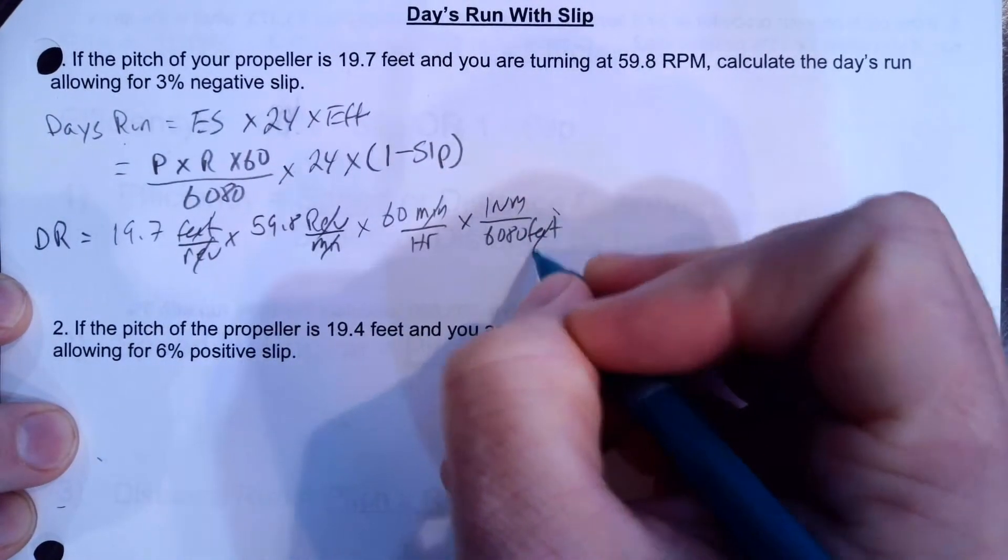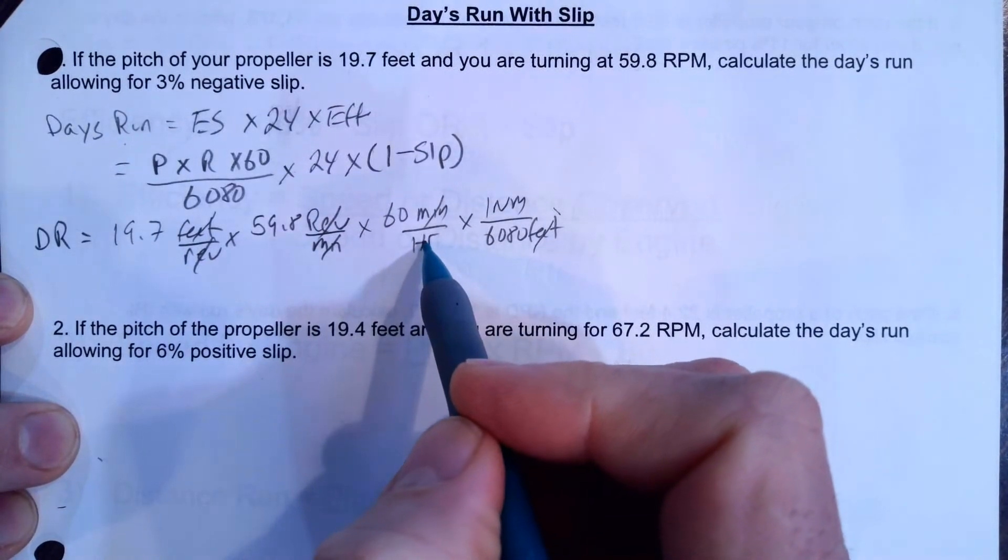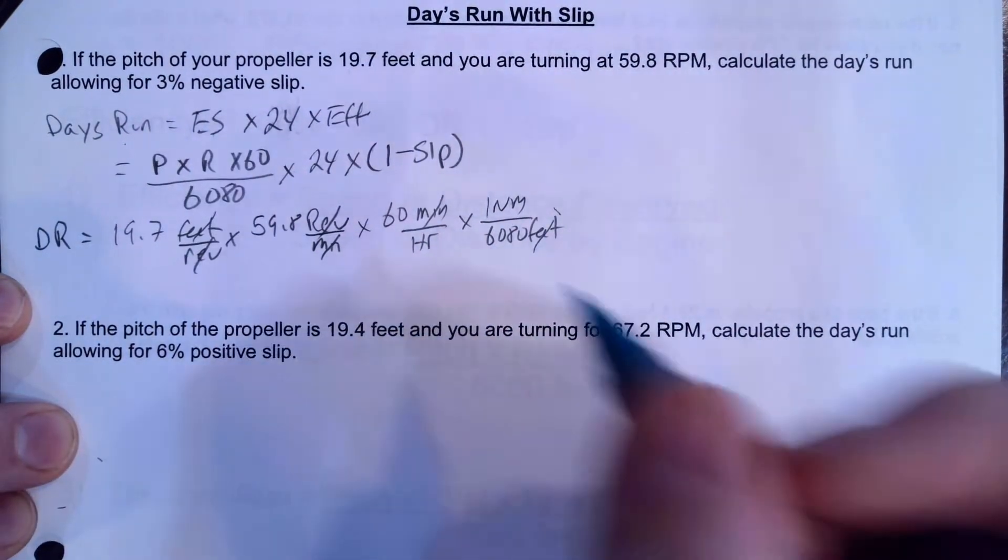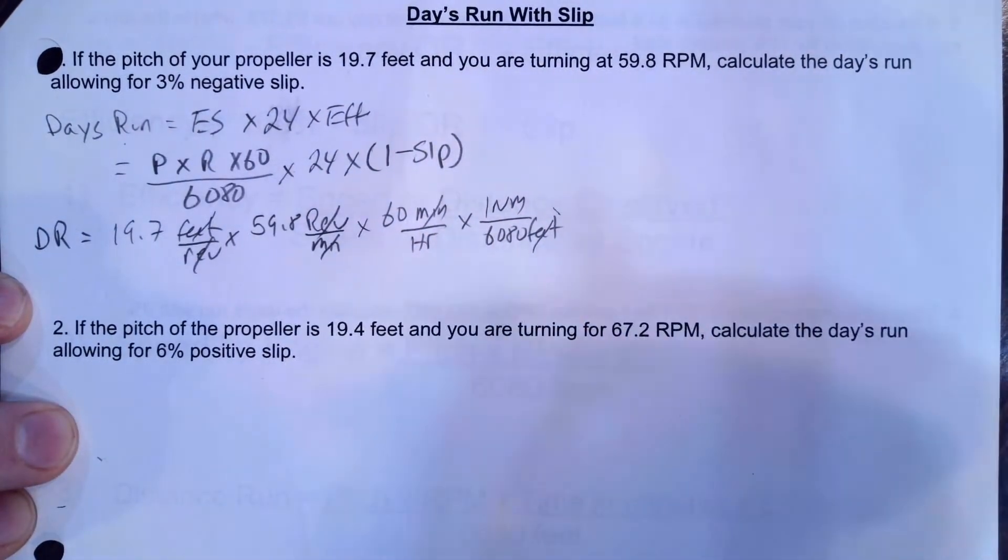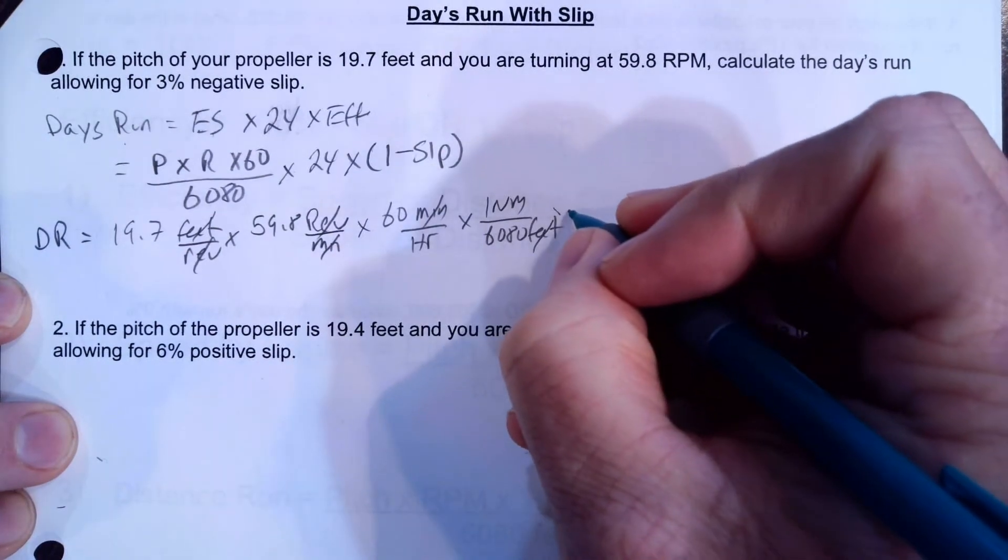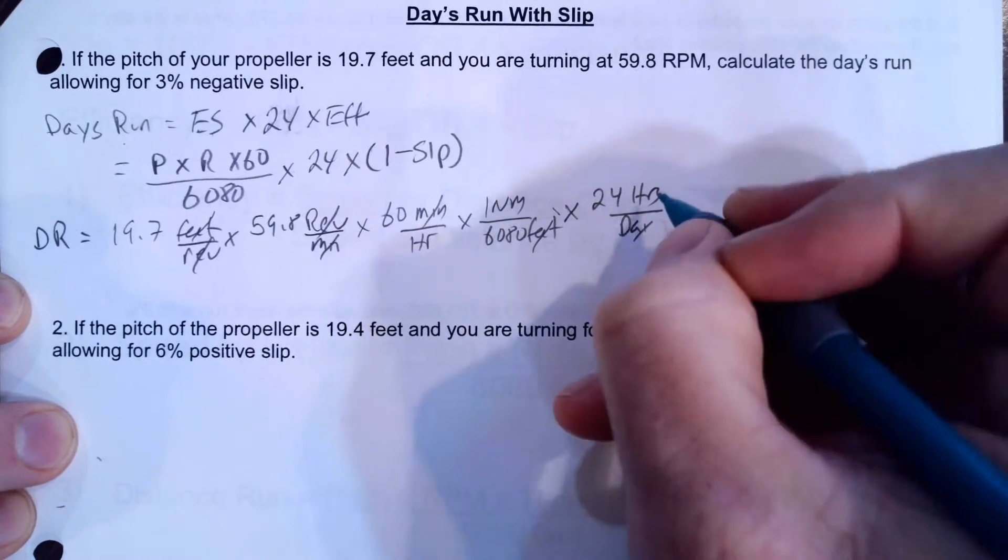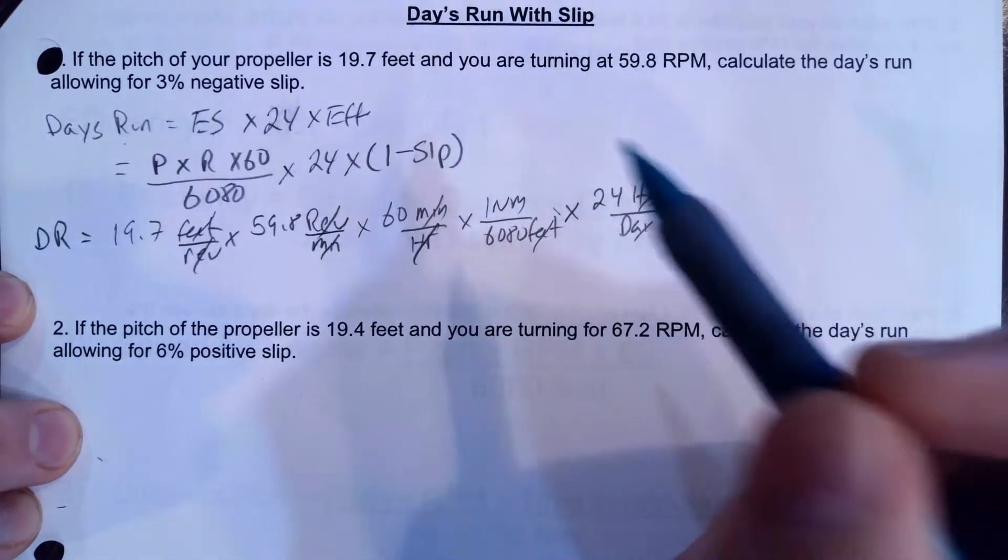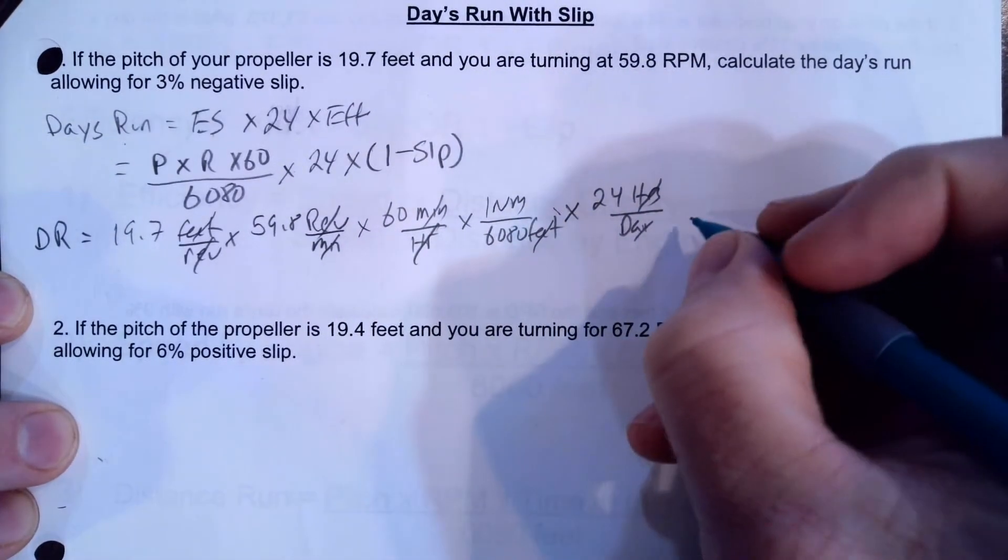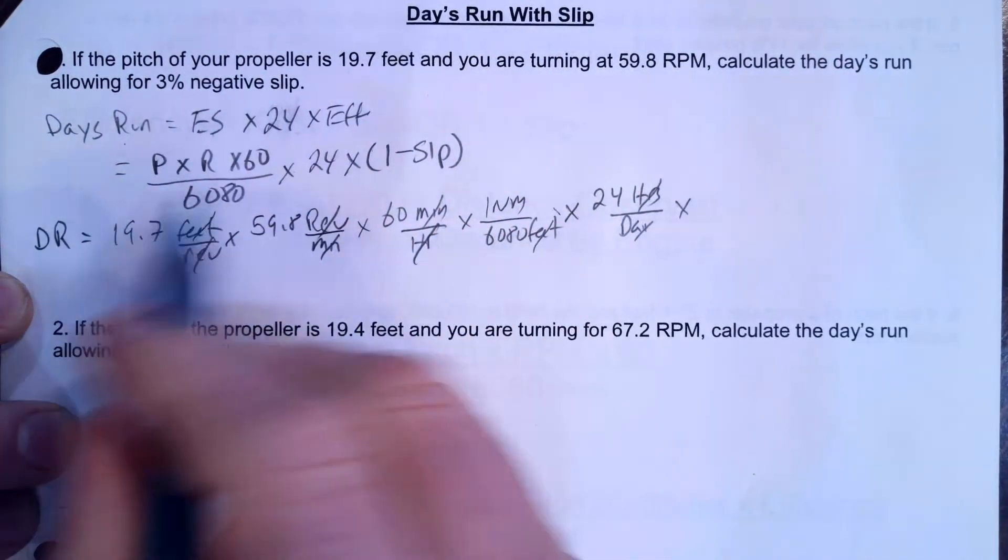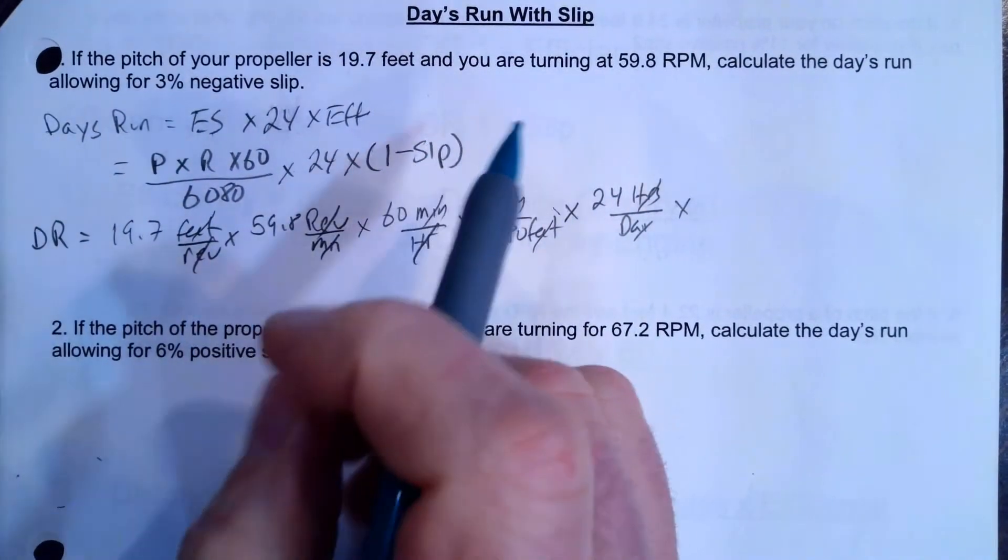And that gets the feet away. So now I'm in nautical miles per hour, which is knots, because engine speed is always knots. But I don't want it for just one hour. Now I'm going to go for 24 hours for a day. So now I'm going to go 24 hours per day, and now the hours are going to cancel. And what I have now is nautical miles per day, which is what they're asking me.